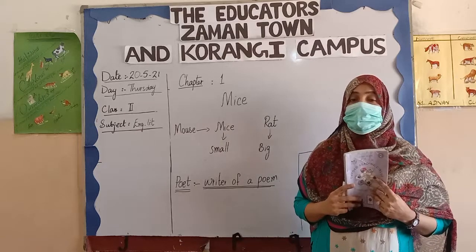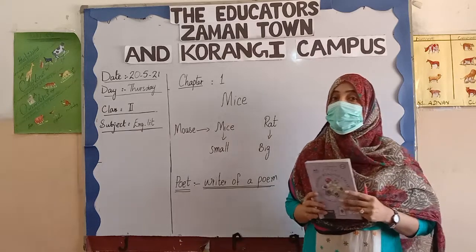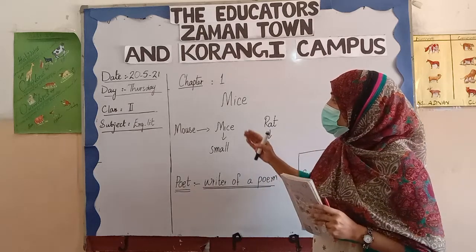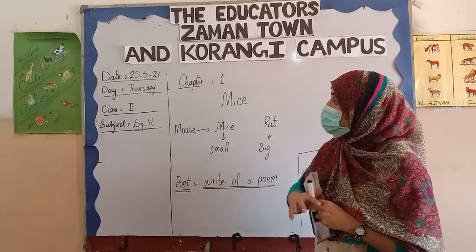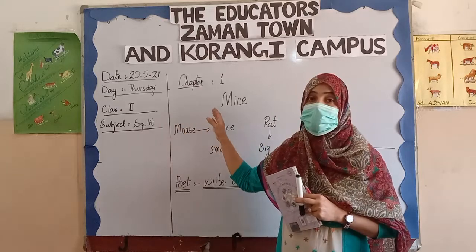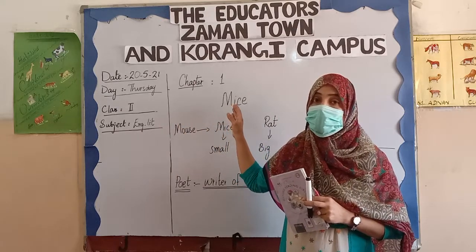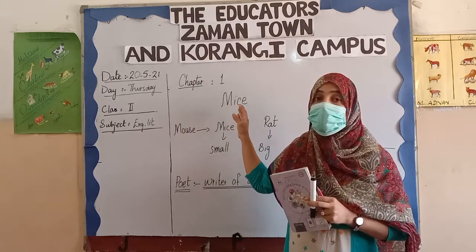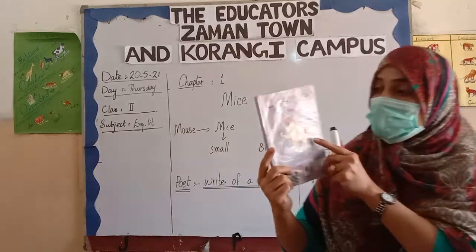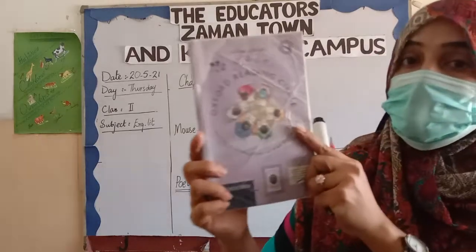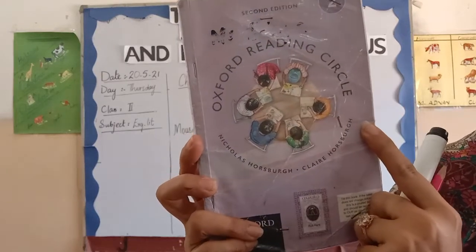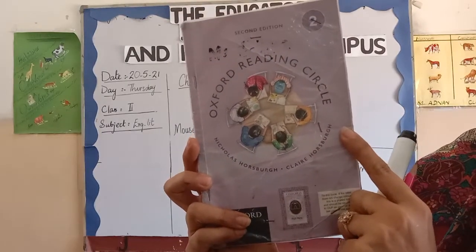Assalamu alaikum my dear students, hope you all are fine and healthy. Today I am here to teach you English literature. This is your English literature period and today we will read about our first chapter. Before starting our chapter, I will show you my English book. This is your English book, Oxford Reading Circle 2.